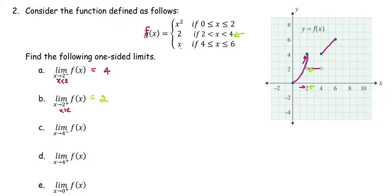For part 3, we find the limit of f of x as x approaches 4 from the left. In this case, x is less than 4, so we go with the second piece again, where f of x is defined to be 2. Coming from the left side of 4, the graph tells us the function value is approaching the value 2.